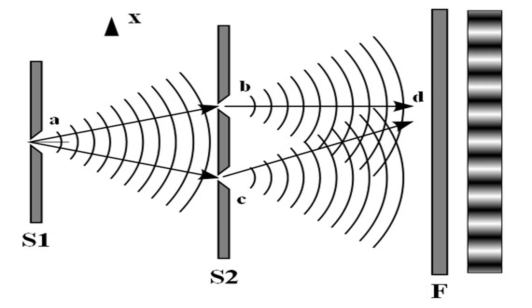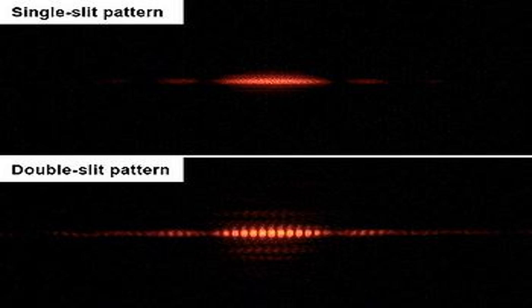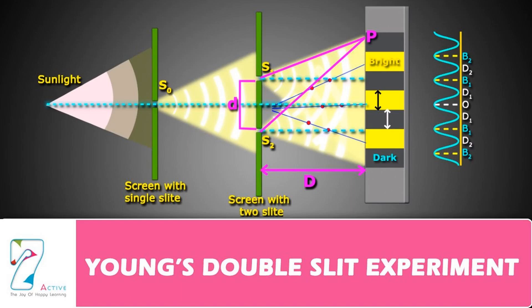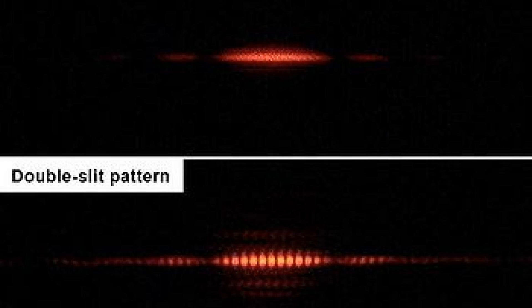The discovery of wave-particle duality is often credited to scientist Thomas Young, who conducted his famous double-slit experiment in 1803. Young noticed that when light passed through two parallel slits, it produced an interference pattern on a screen behind it. This suggested that light was behaving as a wave. However, when he repeated the experiment with a detector that could detect individual photons, the pattern disappeared, indicating that the photons were behaving as particles. This groundbreaking experiment paved the way for future scientists to investigate the nature of matter and energy.